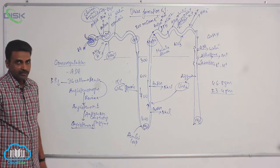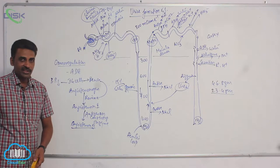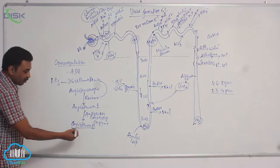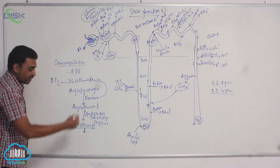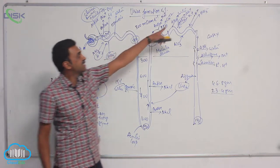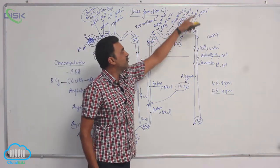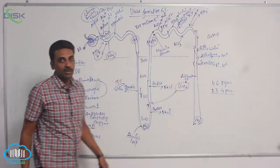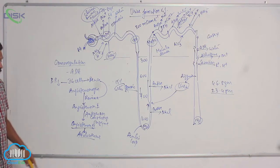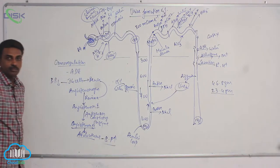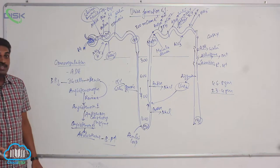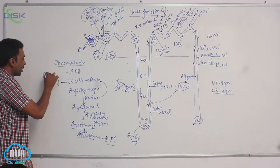Angiotensin 2 — of course it is later converted into angiotensin 3 and 4 also — will go and stimulate the adrenal cortex. When it stimulates the adrenal cortex, it will release aldosterone. Aldosterone is a hormone. Under the influence of aldosterone, sodium absorption occurs. When more sodium is retained, more water is retained, blood volume increases, and gradually blood pressure increases. This is called the renin-angiotensin-aldosterone system — RAAS.